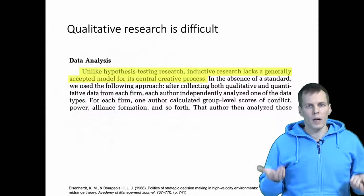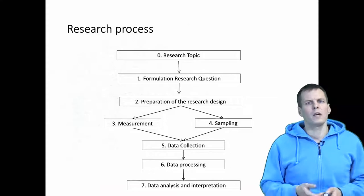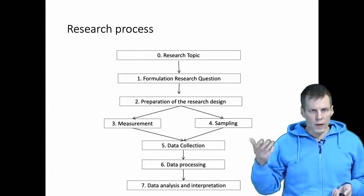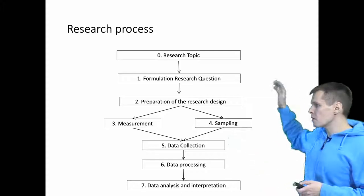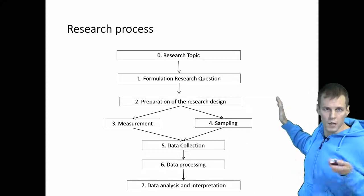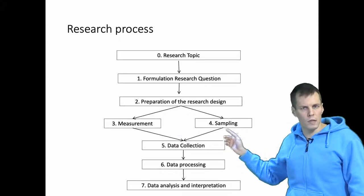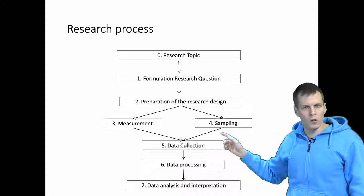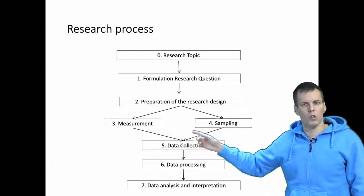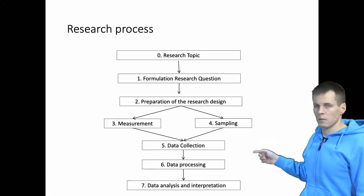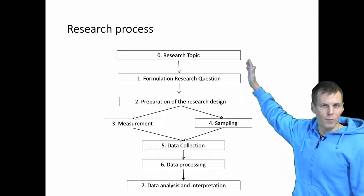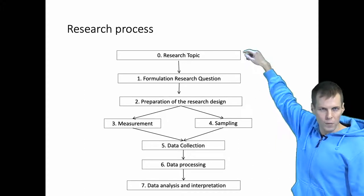So how do we actually do qualitative analysis? First we need to take a look at the research process. This is the normal process according to Singleton's traits, which is used for quantitative studies. You start with a research topic, then you have a question, then you prepare your research design. Here you have two important things: you need to decide what to measure and what units to measure — variables and cases. Then you collect the data, process the data, analyze the data, and interpret the results. This is fairly straightforward — if you have ever read about software engineering, this is like a waterfall process that just goes from top to bottom.